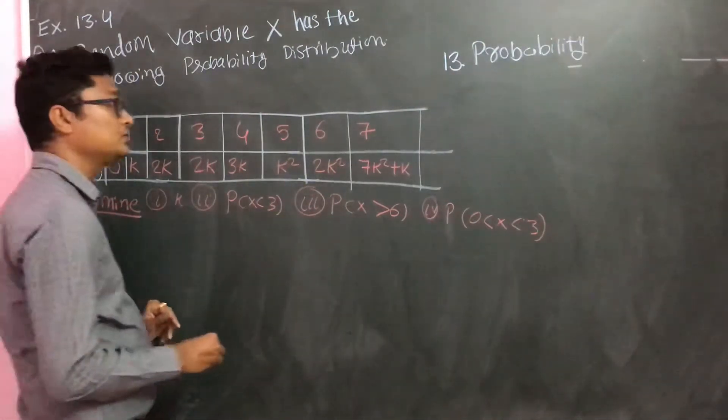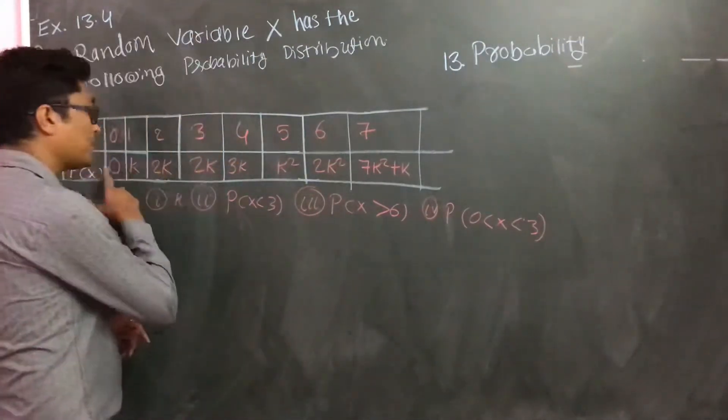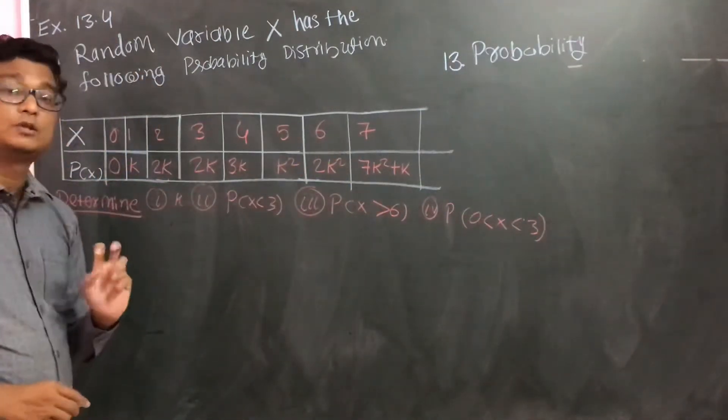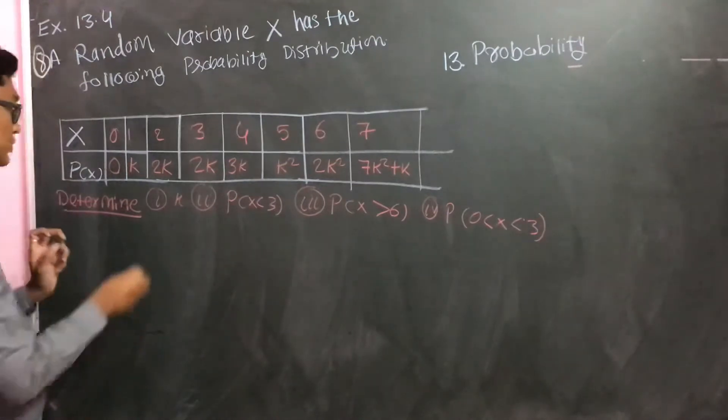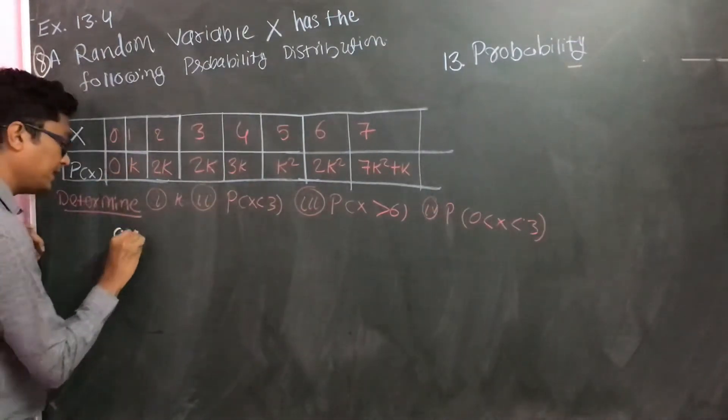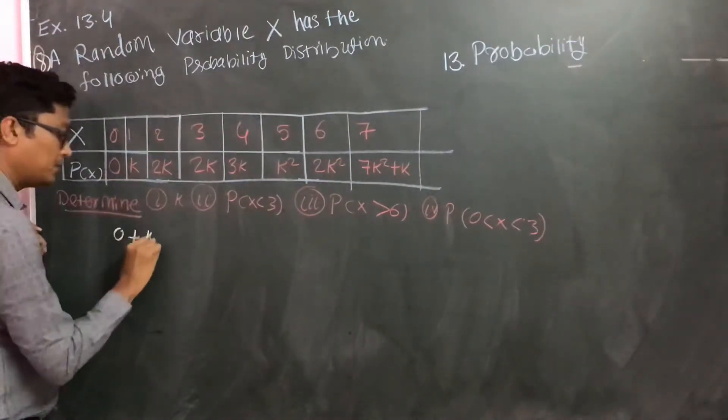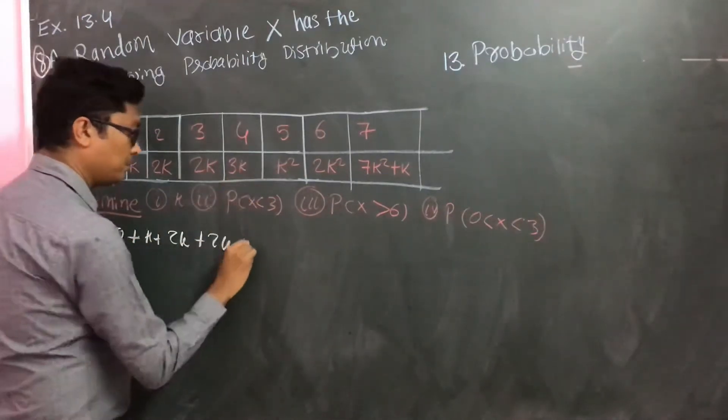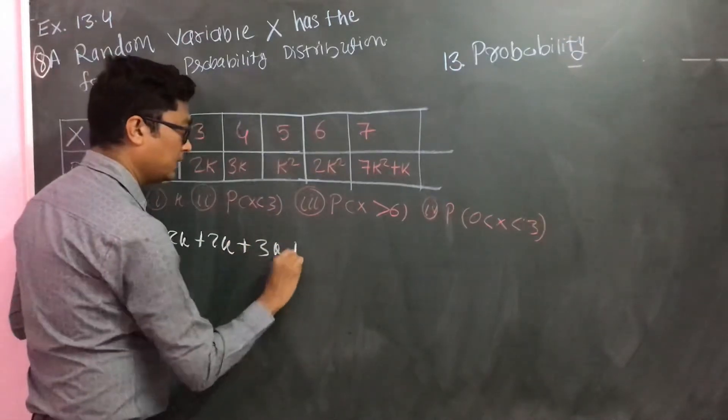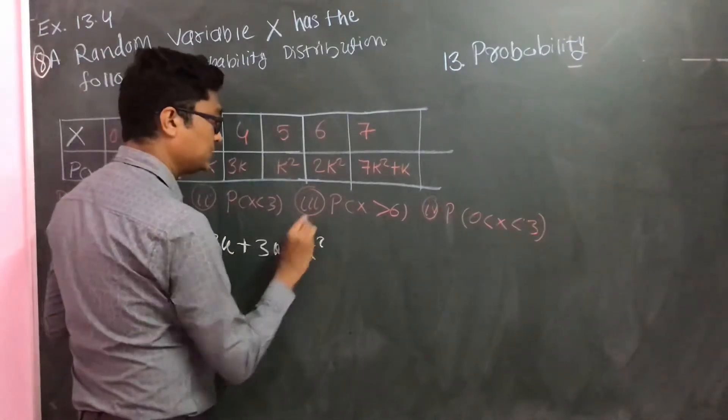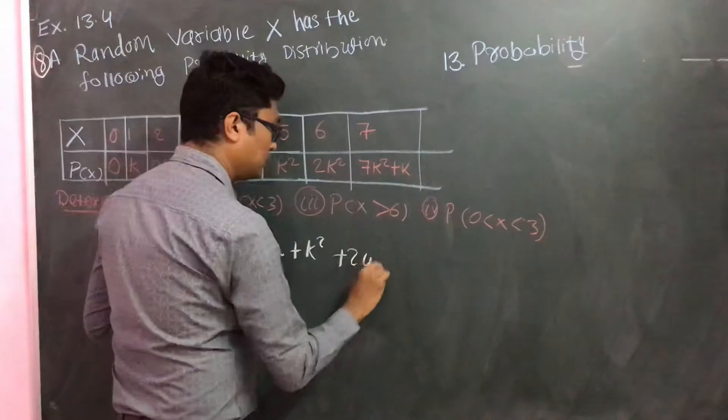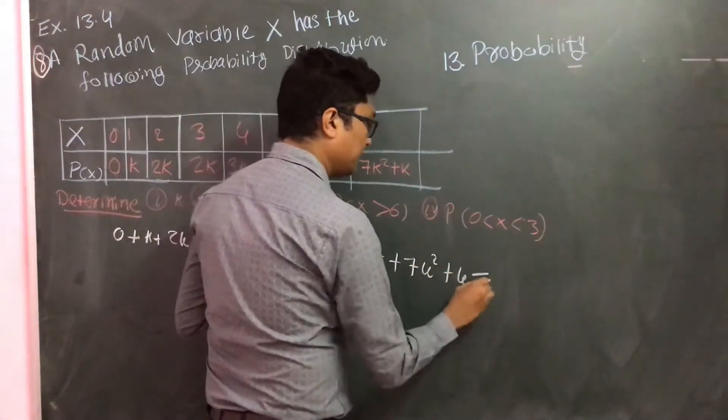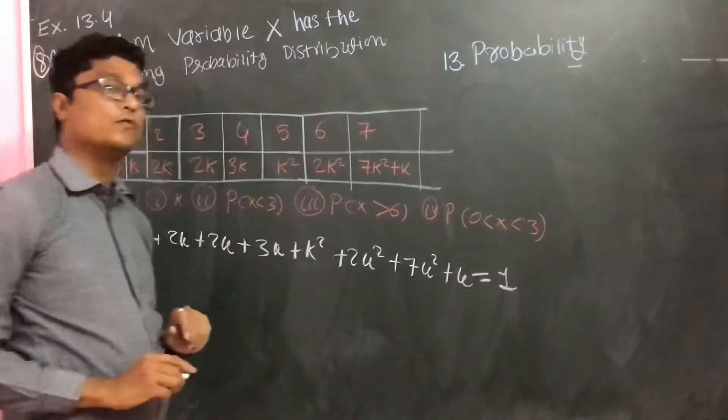Here we should use the fact that the total of all the probabilities equals 1. So I can use that fact. I can write that 0 plus k plus 2k plus 2k plus 3k plus k square plus 2k square plus 7k square plus k equals 1.